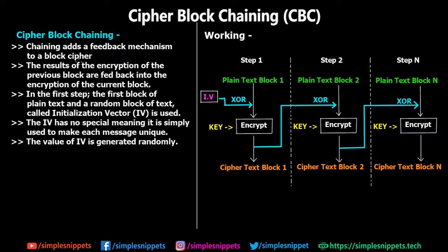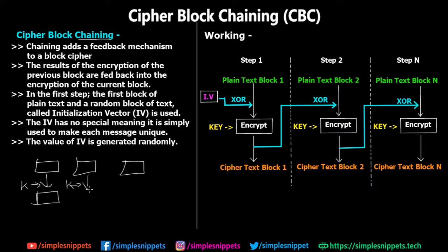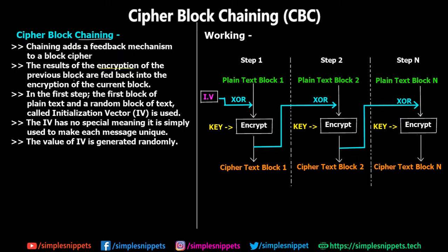Cipher Block Chaining, as the name suggests, involves a chaining or feedback mechanism. In the previous Electronic Code Book mode there was no feedback mechanism — the plain text was divided into blocks and the same key was applied every time to get the cipher blocks. In CBC, the result of the encryption of the previous block is fed back into the encryption of the current block. That is the basic crux of this technique.